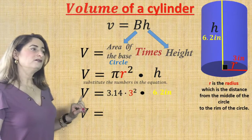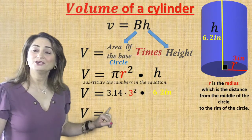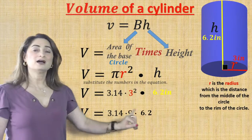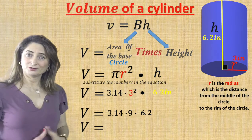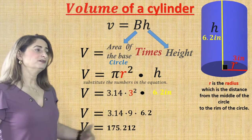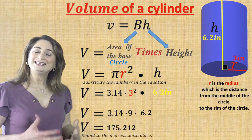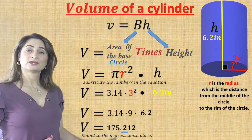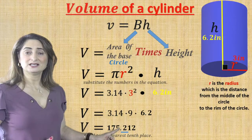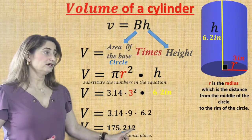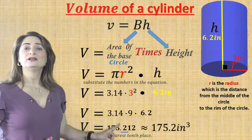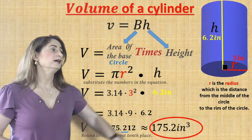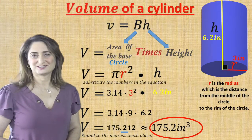Substitute the numbers in the equation: V equals pi, which is 3.14, times the radius — 3 — squared, times the height, which is 6.2 inches. First, evaluate the exponent: 3 squared is 9. Then bring 3.14 down and multiply by the height 6.2. Multiplying all numbers gives you 175.212. Rounding to the nearest tenth: the tenth place is 2, and since the hundredth place is less than 5, the tenth place stays the same. Therefore the volume is approximately 175.2 cubic inches.